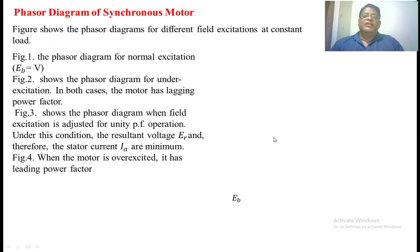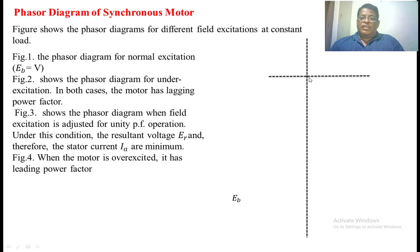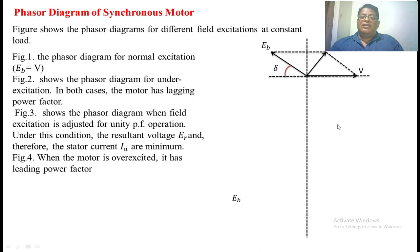Now we are going to see the phasor diagram of the synchronous motor for different field currents. Initially, we assume the magnitude of Eb is less than V — that is, we are applying field current such that Eb < V. We take the Y-axis and X-axis, with voltage on the X-axis. Eb lags V by some angle; all vectors are rotating in the anti-clockwise direction. This angle is nothing but delta, the load angle. The phasor sum of V and Eb gives Er, the resultant voltage applied to the stator winding. The angle between Er and IA is theta, which depends on the parameters of the stator winding and is constant for a given synchronous motor. The angle phi is the angle between the supply voltage V and the armature current IA.